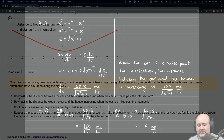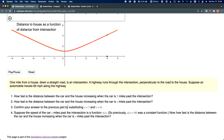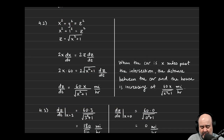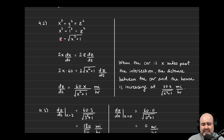For part 4.2, how fast is the distance between the car and the house increasing when the car is x miles past the intersection? Now we're being asked to generalize. Instead of being given specifically three miles past the intersection, what if it's some unknown distance x? We start with x² + 1 = z², so z equals the square root of x² + 1. Using the differentiated equation from 4.1: 2x dx/dt equals 2z dz/dt.